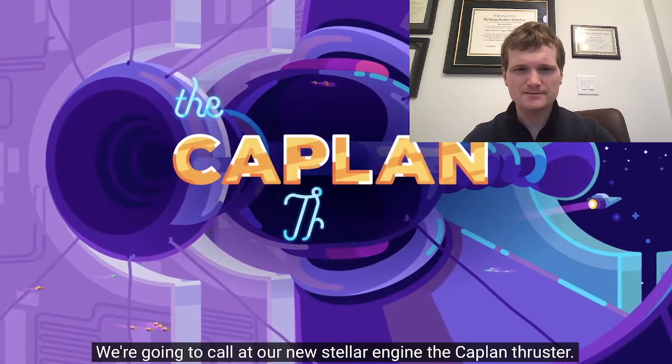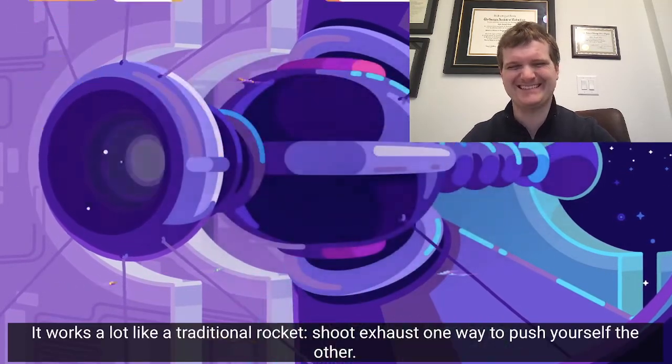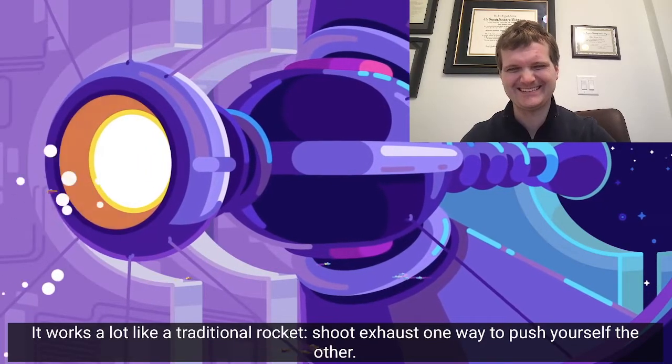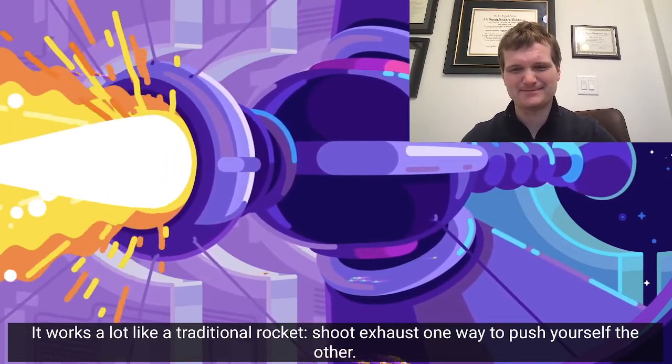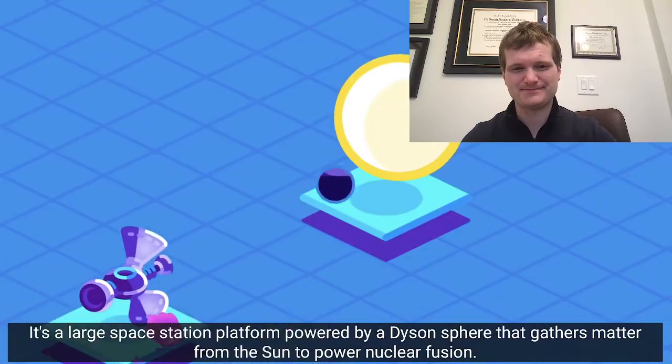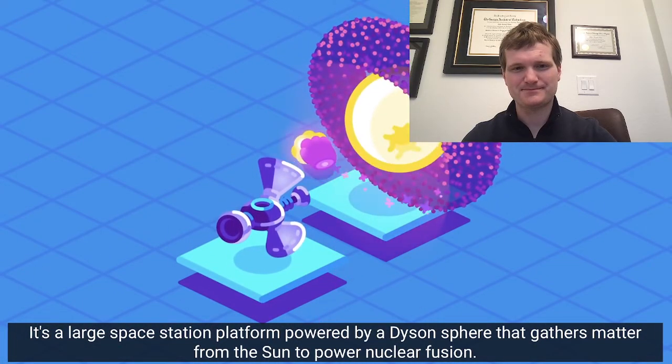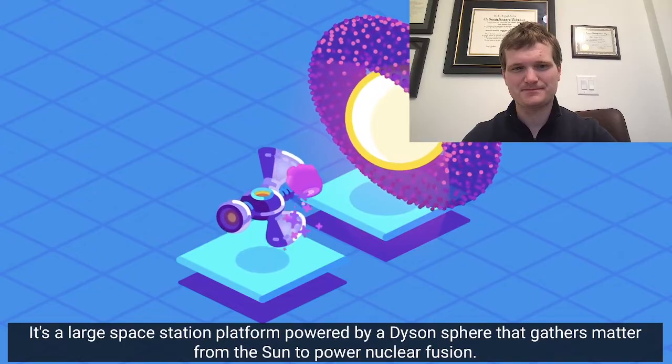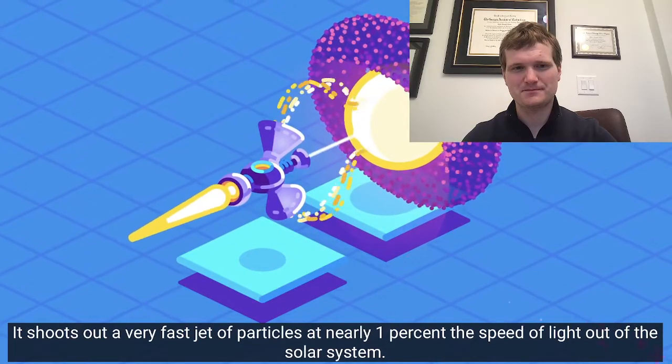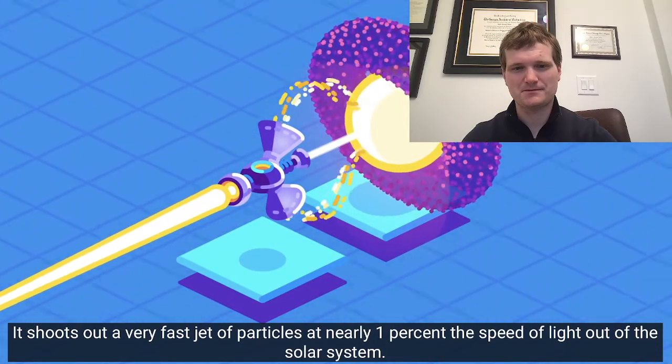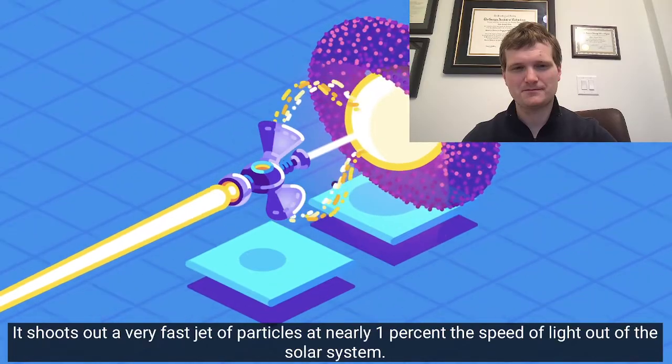We're going to call our stellar engine the Kaplan thruster. It works a lot like a traditional rocket. Shoot exhaust one way to push yourself the other. It's a large space station platform, powered by a Dyson Sphere, that gathers matter from the sun to power nuclear fusion. It shoots out a very fast jet of particles, at nearly 1% the speed of light, out of the solar system.